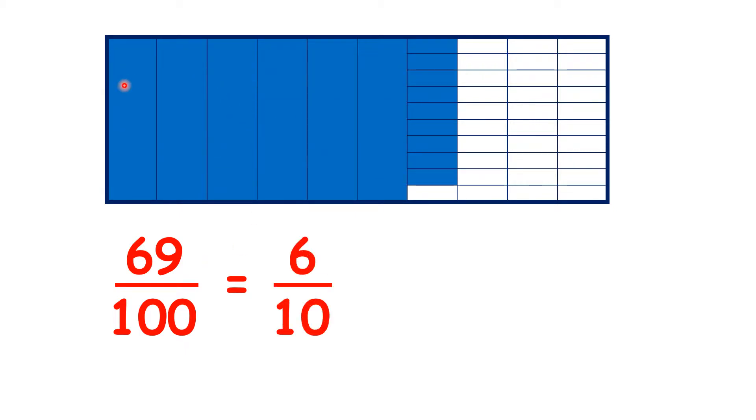If we look at this area here, we can see that we have the same as 6 tenths, because 6 columns out of 10 are coloured blue.